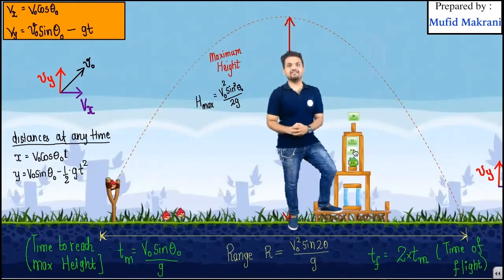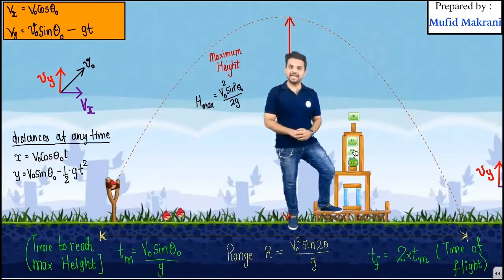Time taken to complete this whole motion is given by two times the maximum time and that is equal to two into v naught sine theta naught by g. Hope you understood. Thank you.